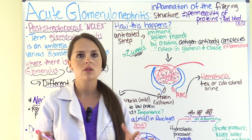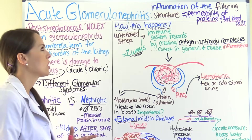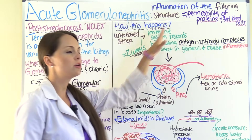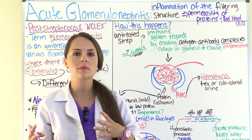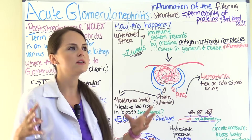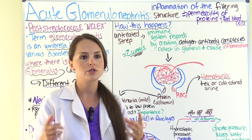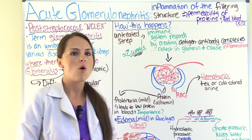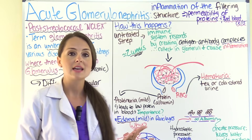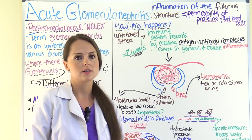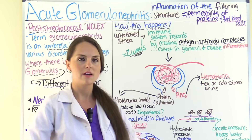So what is acute glomerulonephritis? This is where there is inflammation of the filtering structure of the nephron. Your kidney contains millions of these little nephrons and they are the functional unit of your kidneys and help you produce urine. The specific part of the nephron that filters the blood is the glomerulus — that is why we call this glomerulonephritis.